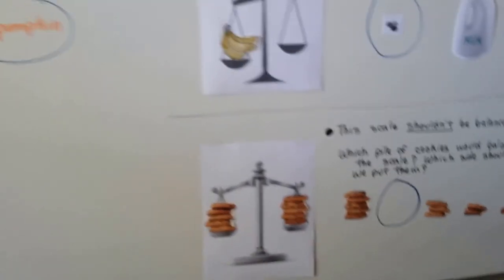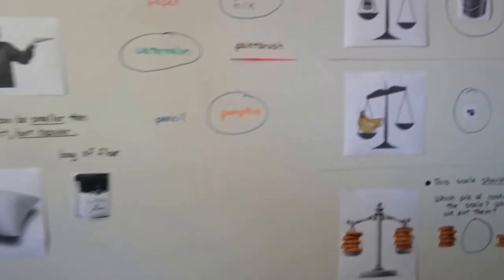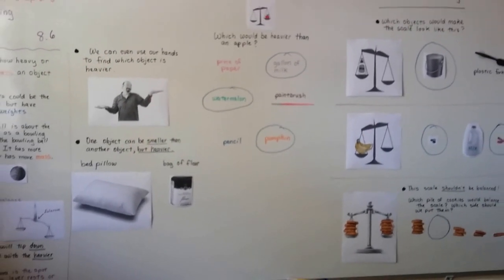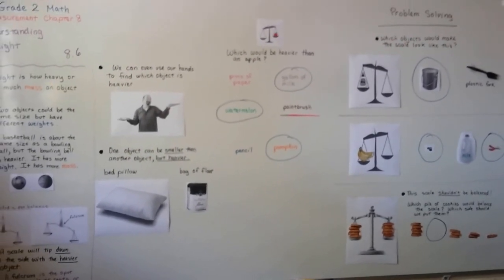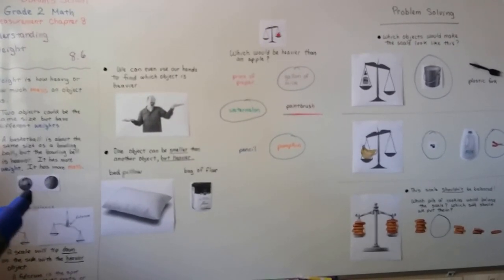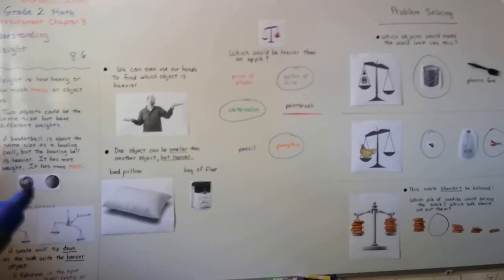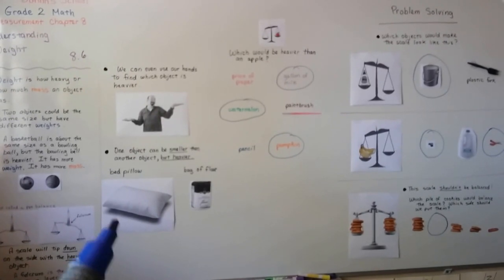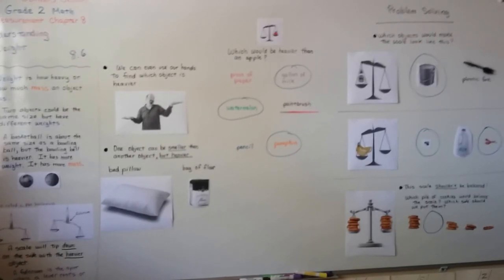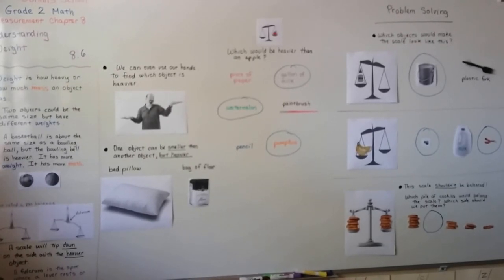So we're going to continue talking about weight and measures. I hope this was helpful. Just remember that things can be the same size, but one can be heavier because it's got more mass. It's got more density. And a bigger thing can be lighter because it doesn't have as much mass. All right. I'll see you next video. Bye bye.